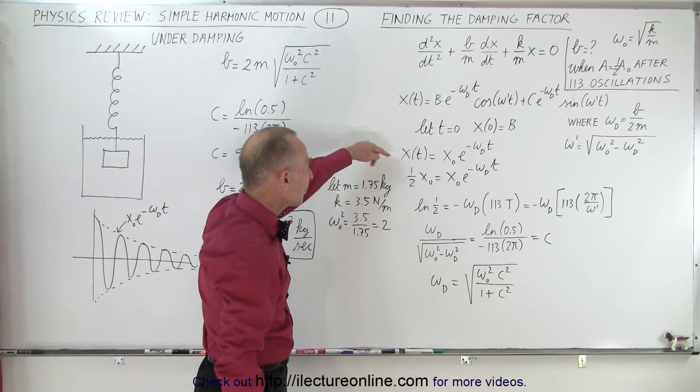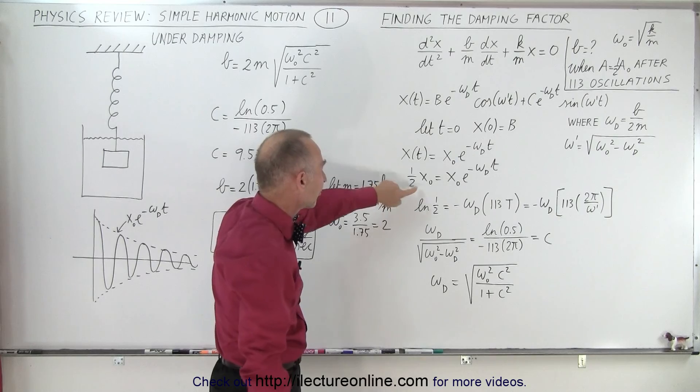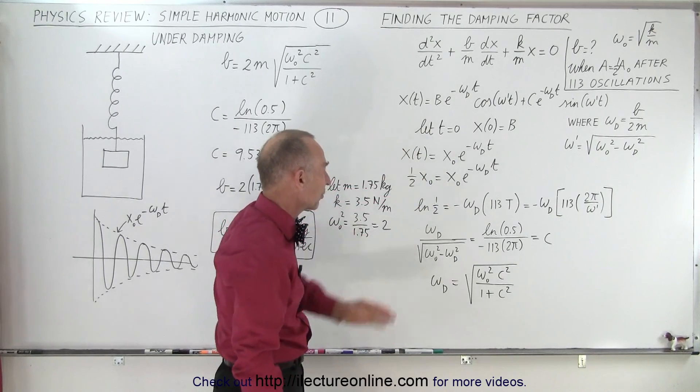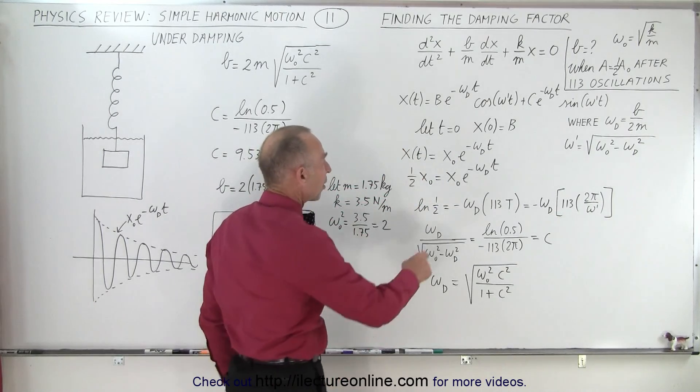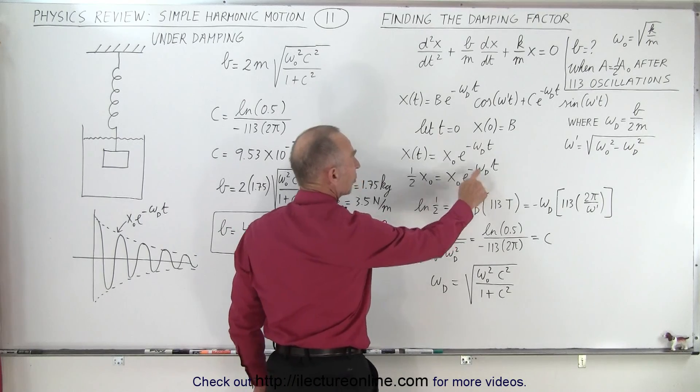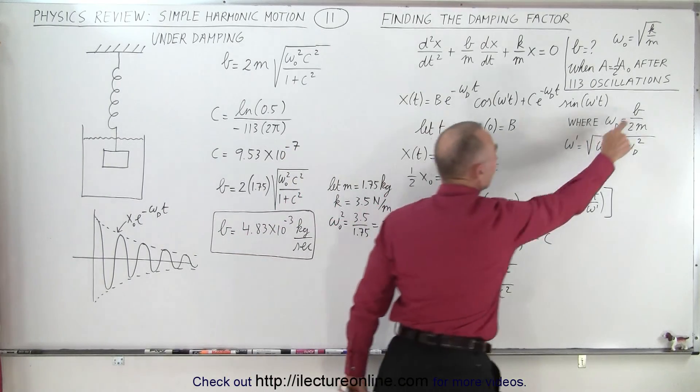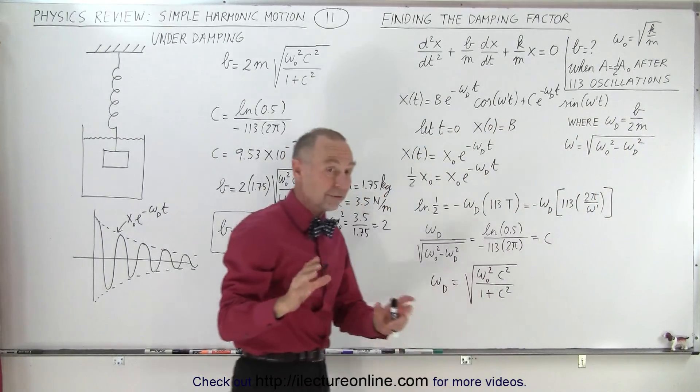notice that we first go ahead and set x sub t equal to half the original amplitude. The x sub now drops out. Then we solve this for omega sub d, because the relation between omega sub d and b is right here. So we first solve for omega sub d.